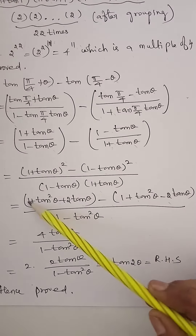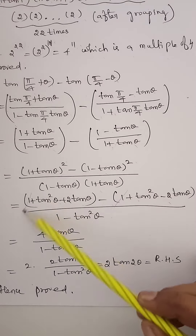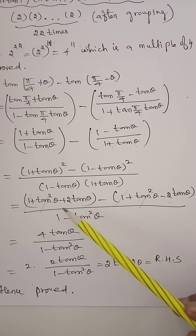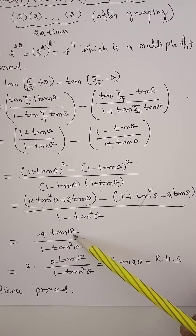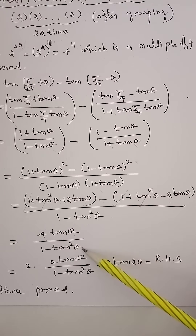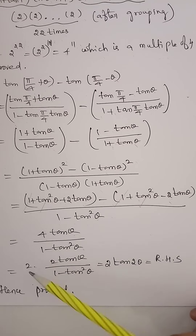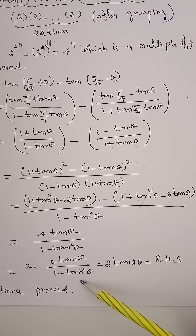Removing the brackets: 1 + tan²θ + 2 tan θ minus 1 minus tan²θ plus 2 tan θ. The 1 and −1 cancel, tan²θ and −tan²θ cancel, leaving 2 tan θ + 2 tan θ = 4 tan θ in the numerator, over (1 − tan²θ) in the denominator.